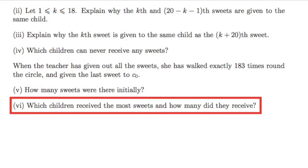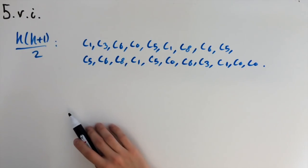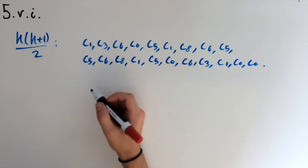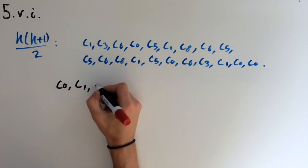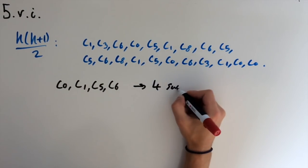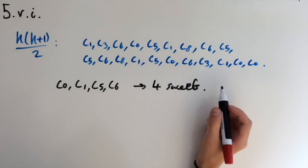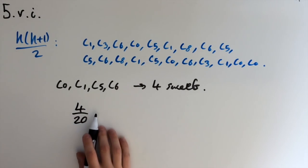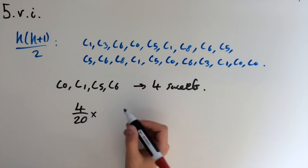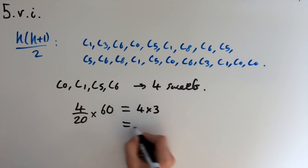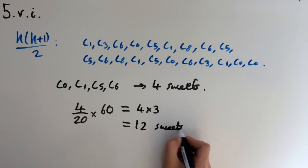For the last part of this question, vi, we are asked which children received the most sweets and how many did they receive? To work out which children received the most sweets, we just need to look at our previous list of which children get the sweets in the 20 period cycle. And we see that c0, c1, c5, and c6 all receive 4 sweets, which is the most of any child. And this is out of 20. So each one gets 4 out of 20. So this is the ratio of the share of the total amount of sweets they get. And we worked out earlier that there was 60 sweets. So each child gets 4 times 3, which equals 12 sweets. And that's the answer.